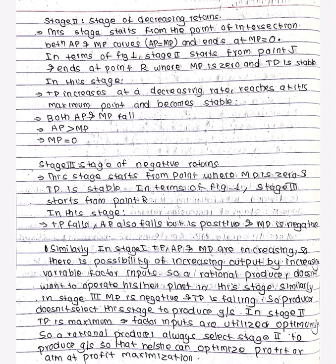In Stage I, TP, AP, and MP are increasing and there is a possibility of increasing output by increasing variable factor inputs. A rational producer doesn't want to operate his or her plant in this stage, because resources are not yet optimally utilized. A rational producer uses limited resources to produce maximum goods and services.